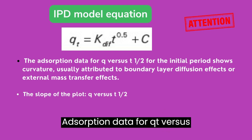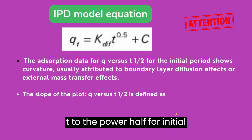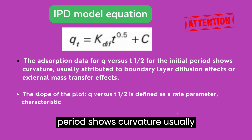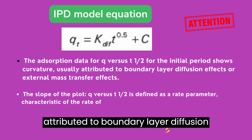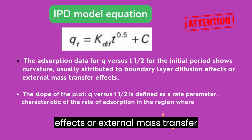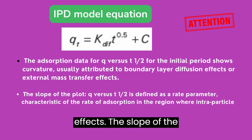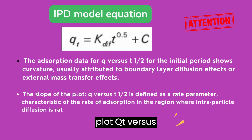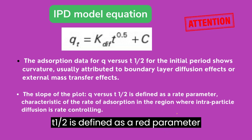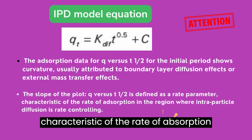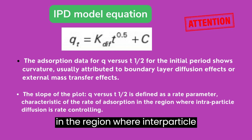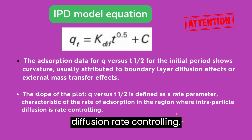Adsorption data for Qt versus t to the power of half for the initial period shows curvature, usually attributed to boundary layer diffusion effects or external mass transfer effects. The slope of the plot Qt versus t^(1/2) is defined as a rate parameter characteristic of the rate of adsorption in the region where intraparticle diffusion is rate-controlling.